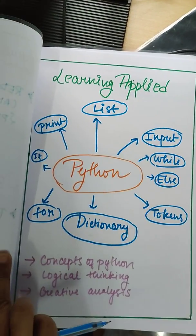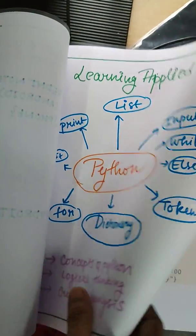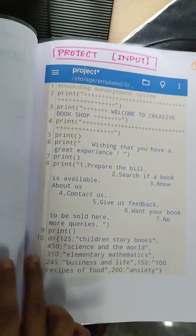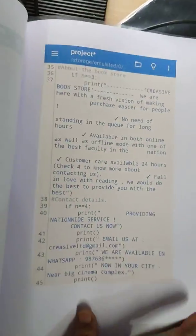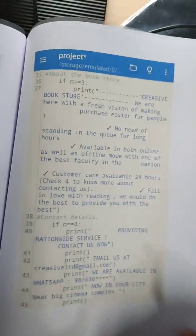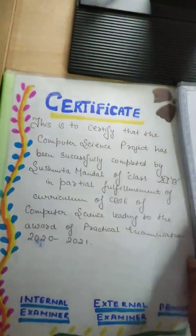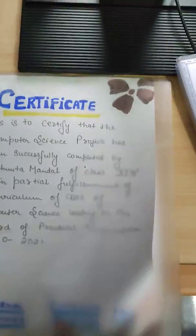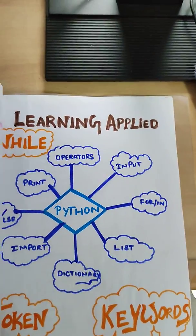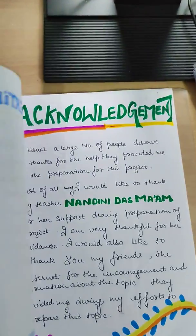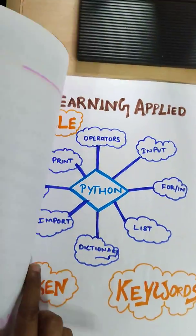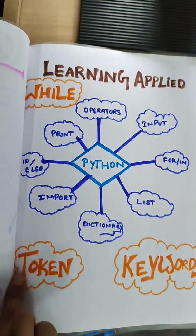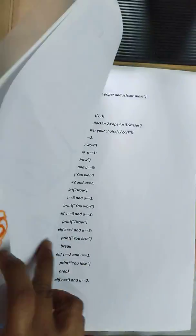Next is learning applied Python, then the project programming. These are the programs — everything is colorful with the outputs like this. All the files you can see here: the certificate, then the acknowledgement, then learning applied Python.